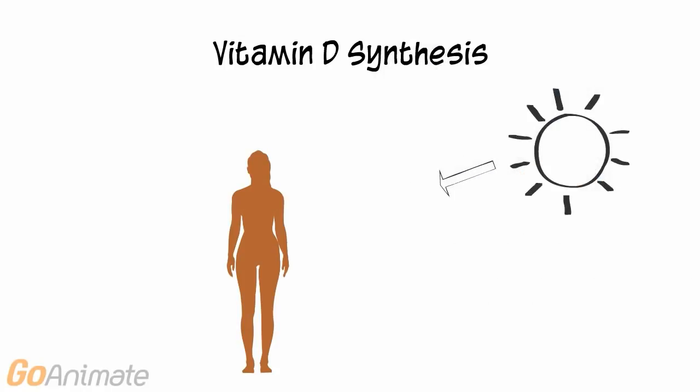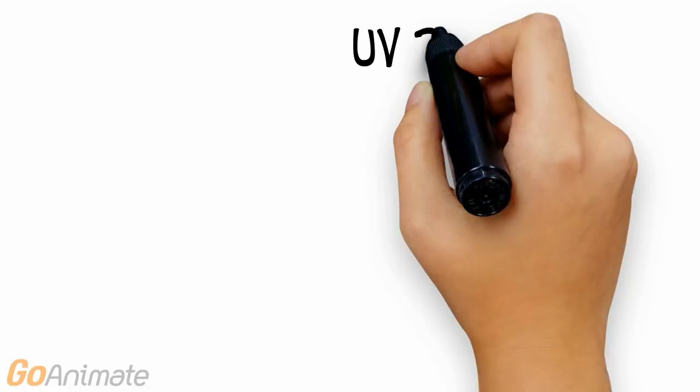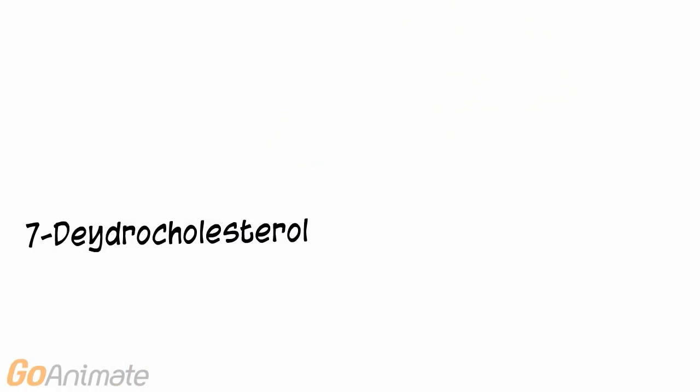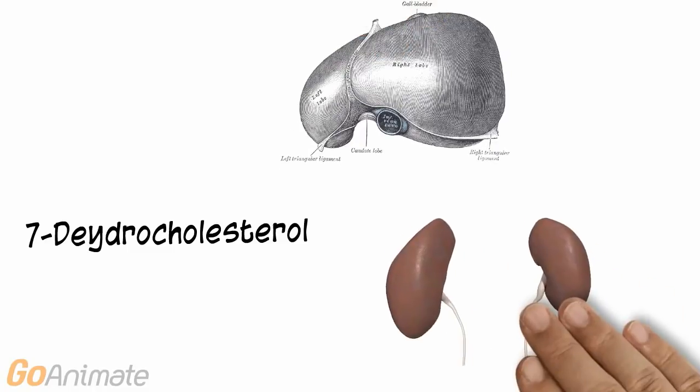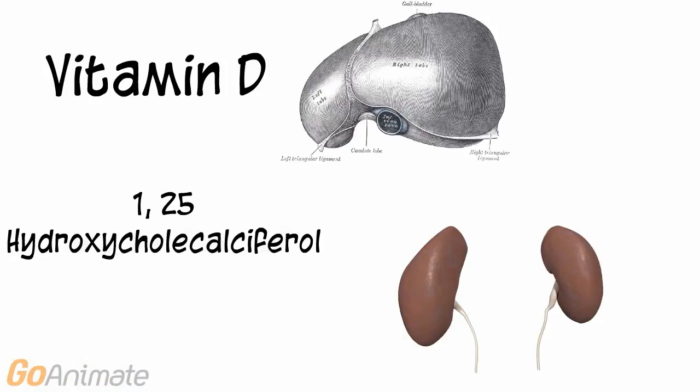The skin also helps to synthesize vitamin D. Vitamin D, or cholecalciferol, is synthesized when a precursor molecule known as 7-dehydrocholesterol absorbs ultraviolet radiation. This molecule then travels to the liver and kidney where it is converted to the active form of vitamin D, which is 1,25-dihydroxycholecalciferol. Vitamin D is an important substance in the body. It functions to help the body absorb calcium and helps with calcium transport in the intestines.